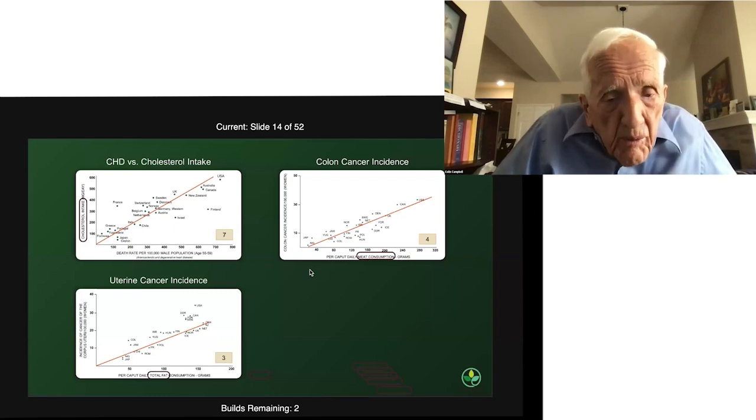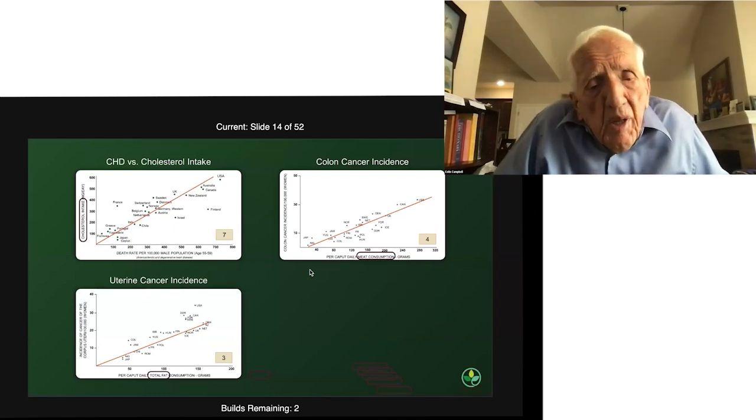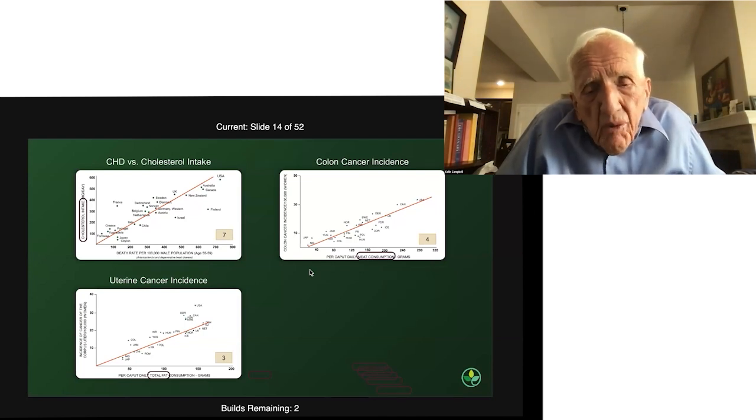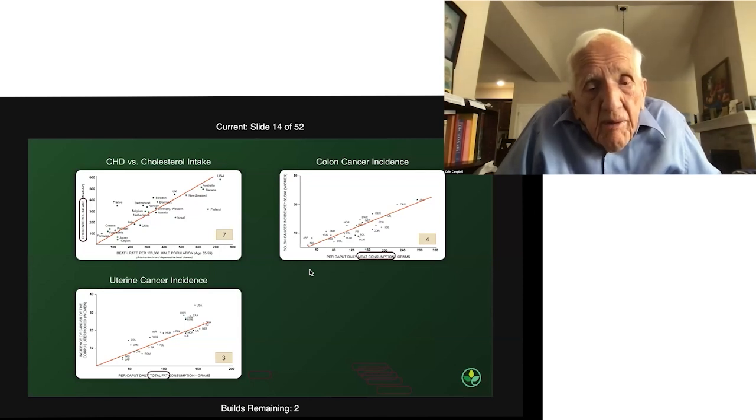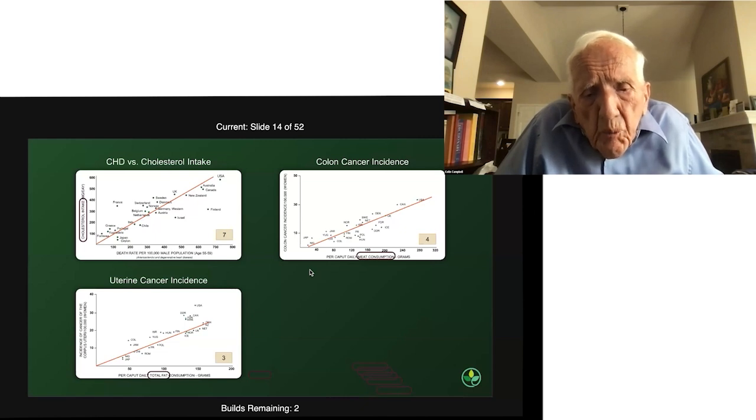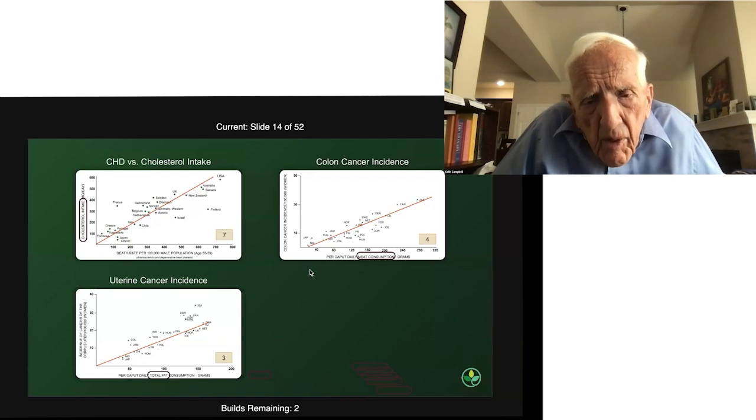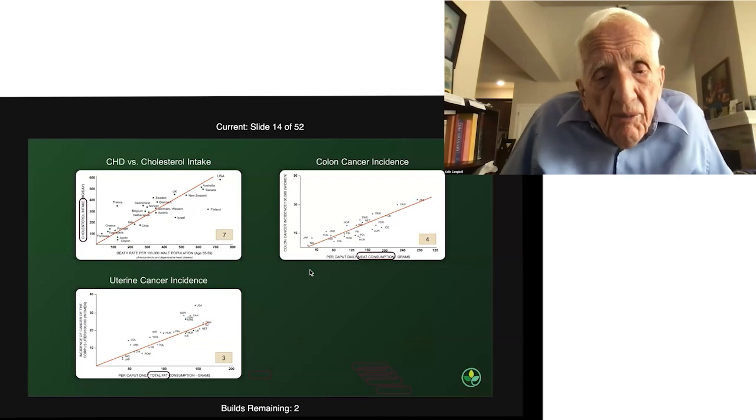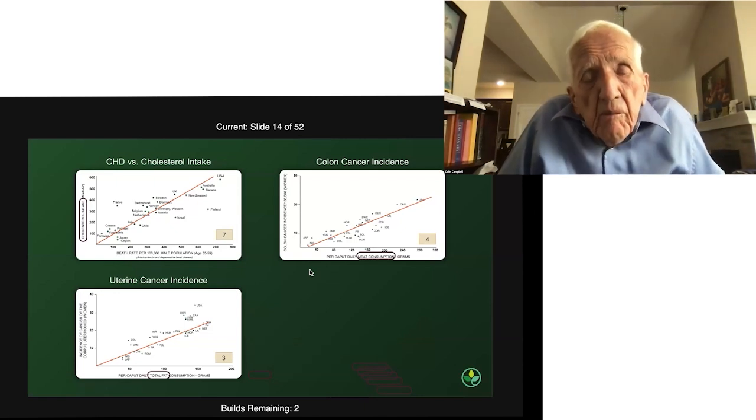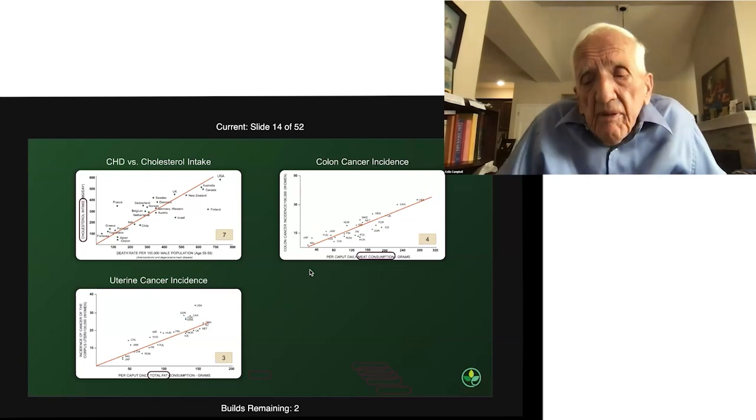Here's one on uterine cancer. They looked at this and represented it as total fat intake. And therefore, they concluded, like everybody else would, that total fat is related to uterine cancer incidence. Now, total fat, in this particular case, is correlated by 0.94 across the different countries around the world. Total fat intake is pretty much a function of animal food intake. Again, the USA is at the top. So, we start eating animal food, less plant food, obviously. We get much more uterine cancer. Look at all these different diseases appearing.